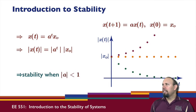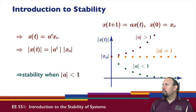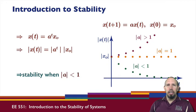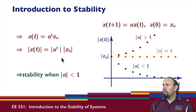We basically have three possibilities depending on the magnitude of a^t: when the magnitude of a is greater than one, the sequence diverges; when the magnitude of a is equal to one, the sequence remains constant; and when the magnitude of a is less than one, the sequence converges.